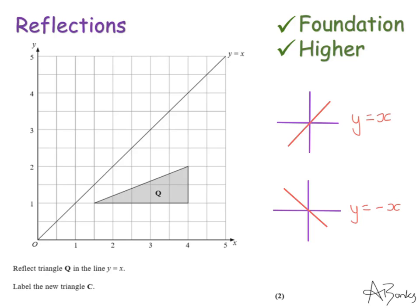Here's another example, this one is harder because we have a diagonal line to reflect my shape in. This diagonal line, they've drawn on for me, it's called Y equals X. You need to know how to draw this line though because they won't always give you it drawn.